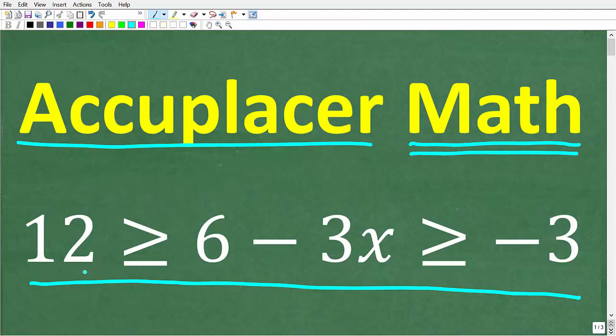Let's take a look at the problem. We have 12 ≥ 6 - 3x ≥ -3, and what we want to do is solve this compound inequality. If you think you know the answer, put that in the comment section. I'm going to walk through the complete solution in just one second.